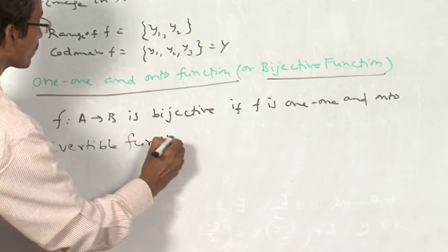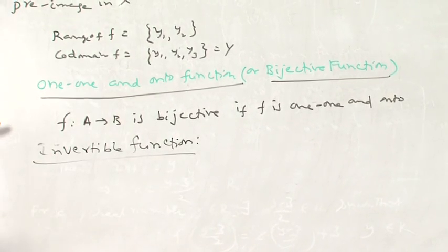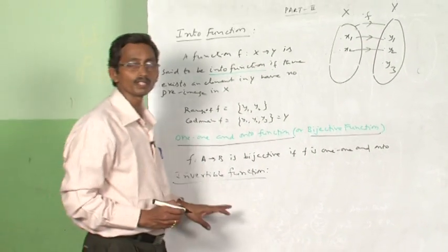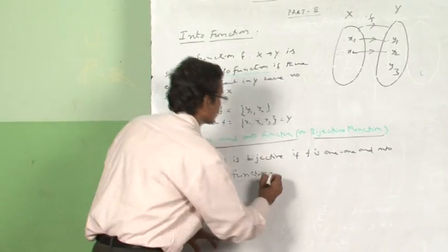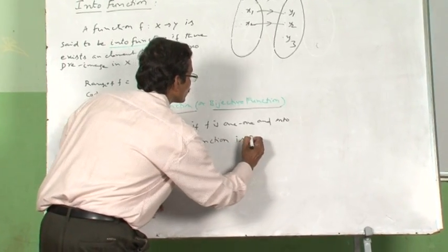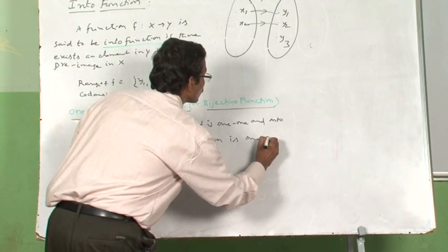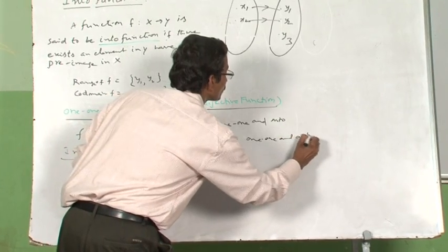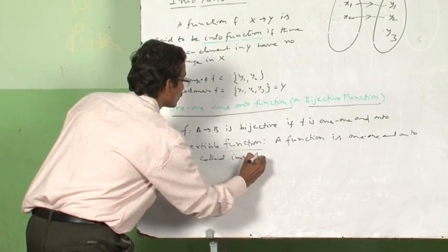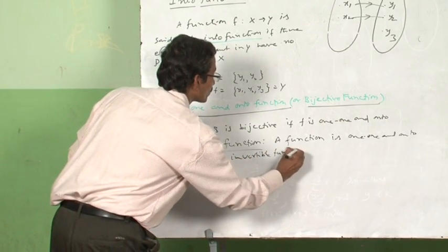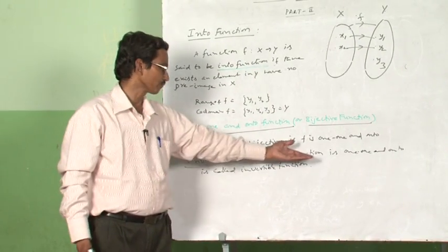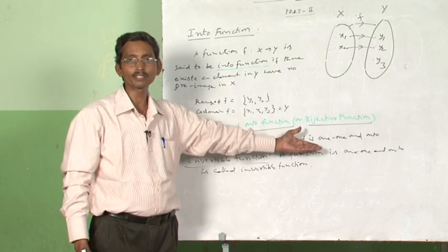Invertible function: a function which is one-one and onto is said to be an invertible function. So invertible function means F is one-one and onto.